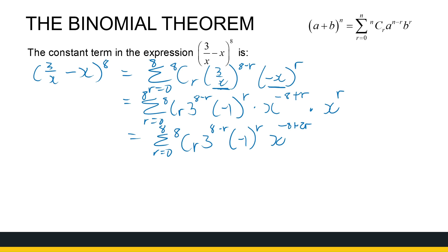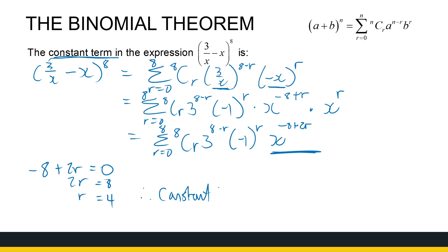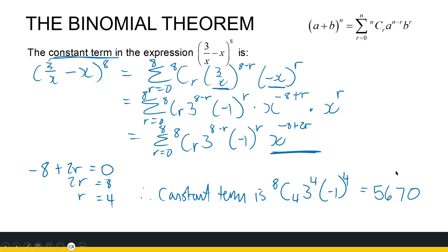Now it's neat and tidy. Let's go back to our question: what is the constant term? I want the value of r for which the exponent of x is 0. So I want −8 + 2r = 0, meaning 2r = 8, so r = 4. Therefore I can conclude my constant term is when r = 4: 8C4 · 3^4 · (−1)^4. You can find that constant — it's 5,670. So that's the constant term. If you had expanded this one totally with the binomial theorem, somewhere in the middle there'll be a term without any x's. r = 4, so that'll be the fifth term.